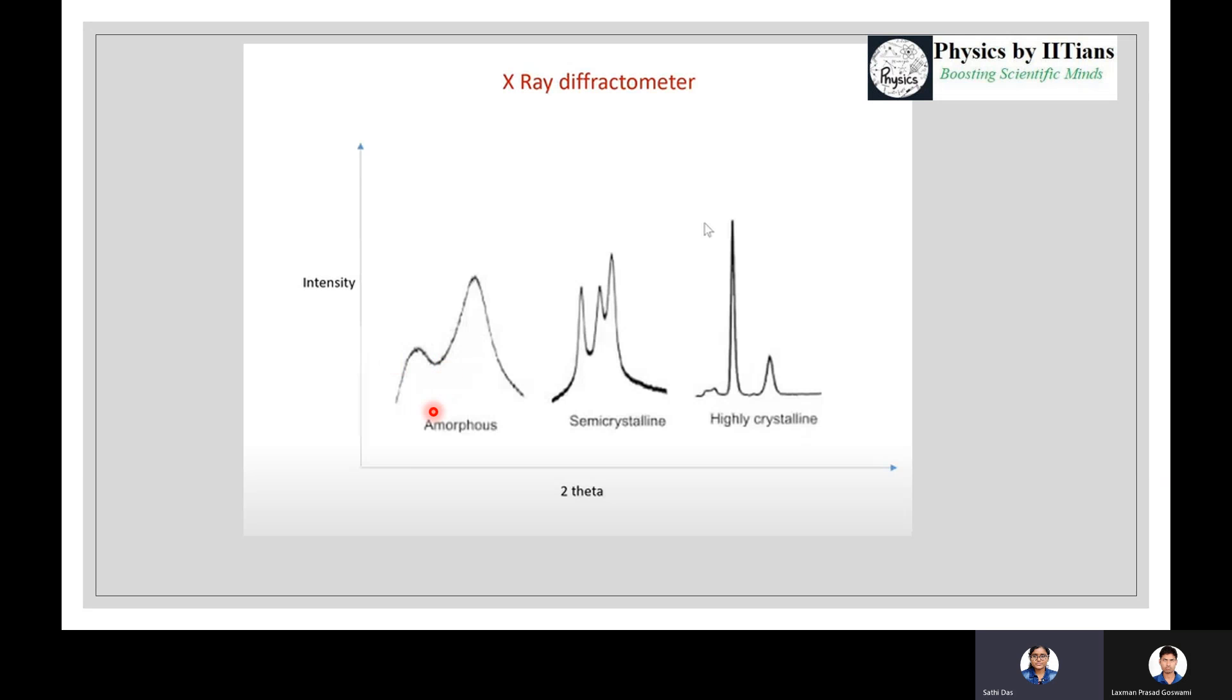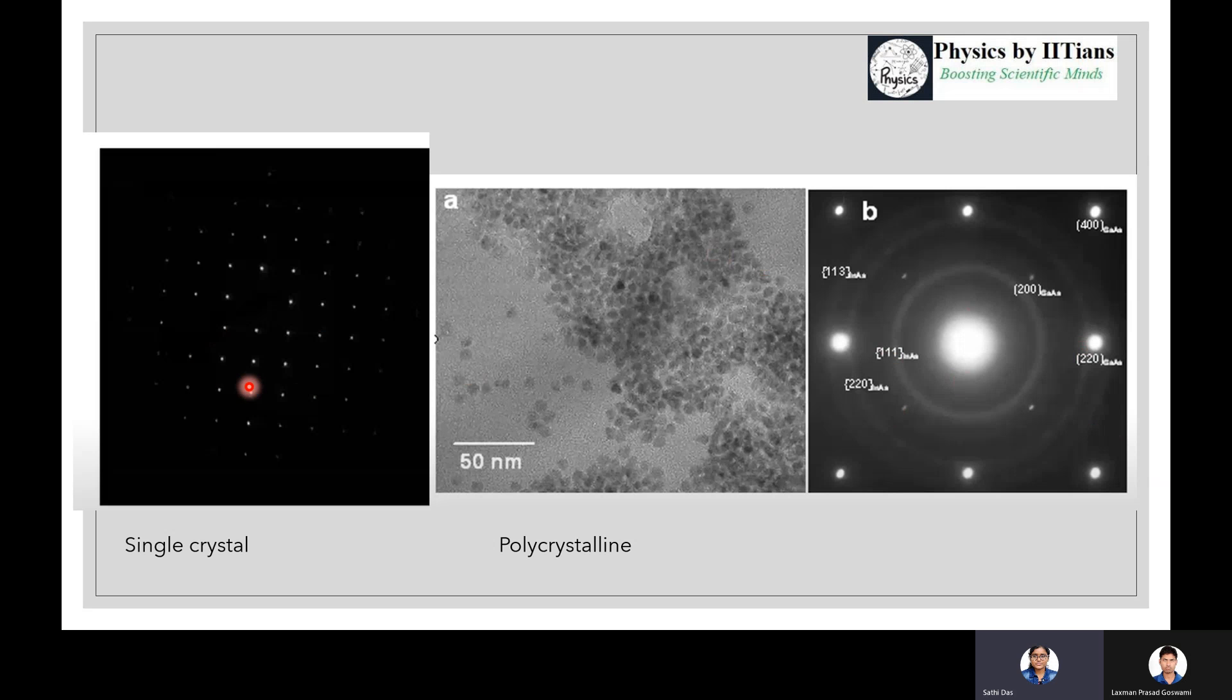If you take the XRD pattern, these are the intensity versus two-theta. Now I give you some extra information: for amorphous material, you will not get any defined peaks but some arbitrary peaks with broad spectrum. For semi-crystalline, it will be like this way, and for highly crystalline, you will get distinguished peaks. If you want to take the diffraction picture, look here - for single crystal, these are the diffraction spots where the X-rays can be scattered. These are the locations of the lattices which are totally periodic in manner. For polycrystalline, we don't get diffraction spots like single crystal; rather we will get rings - some rings will be formed that are alternating intense white bands and dark bands.